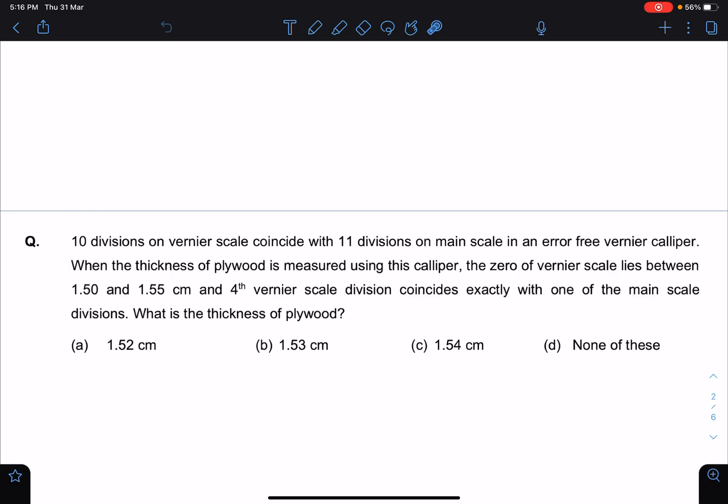And fourth vernier scale division is coinciding exactly with one of the main scale divisions. What is the thickness of the plywood? So these are the four options given to us.